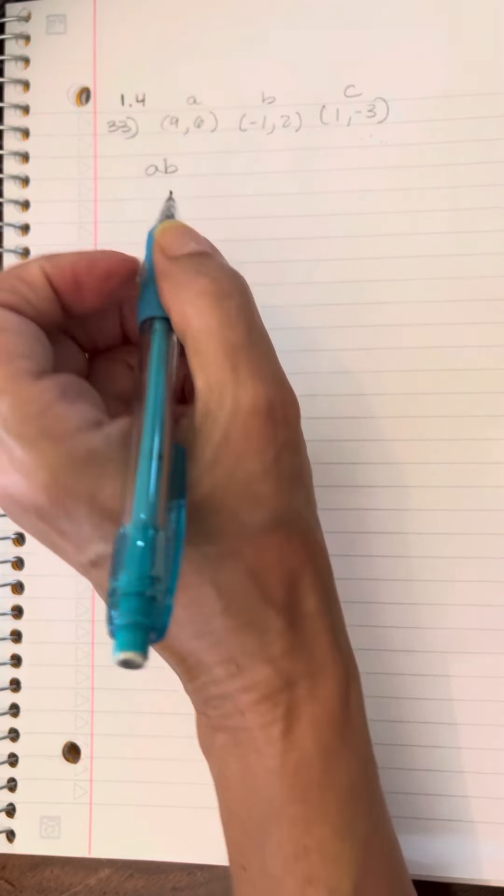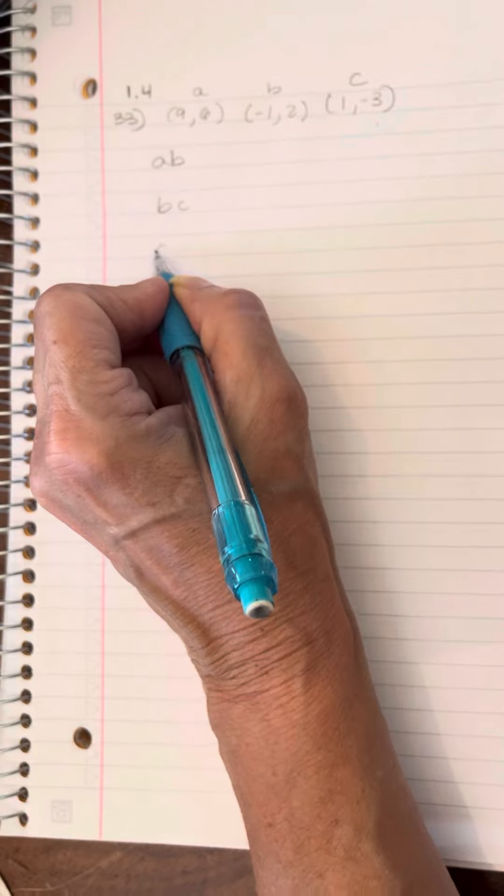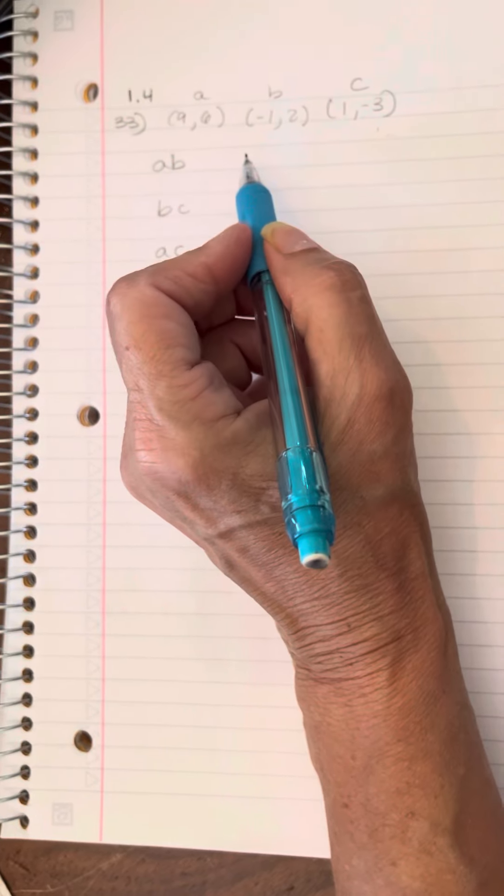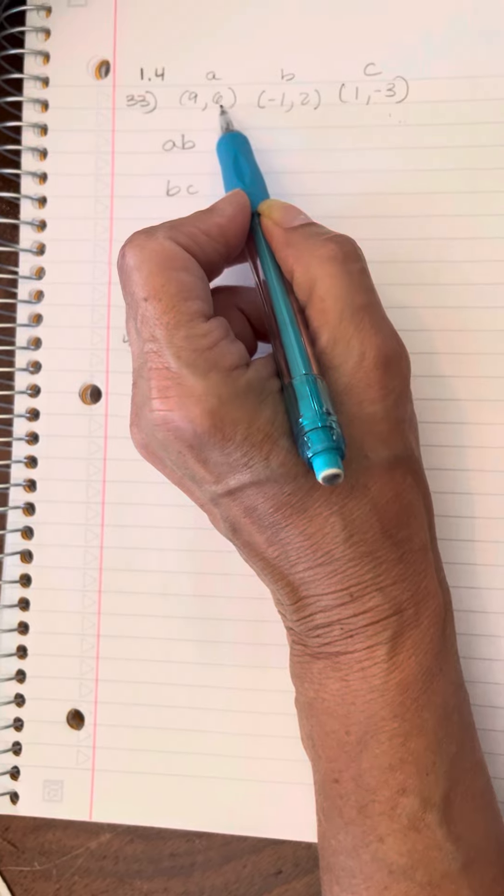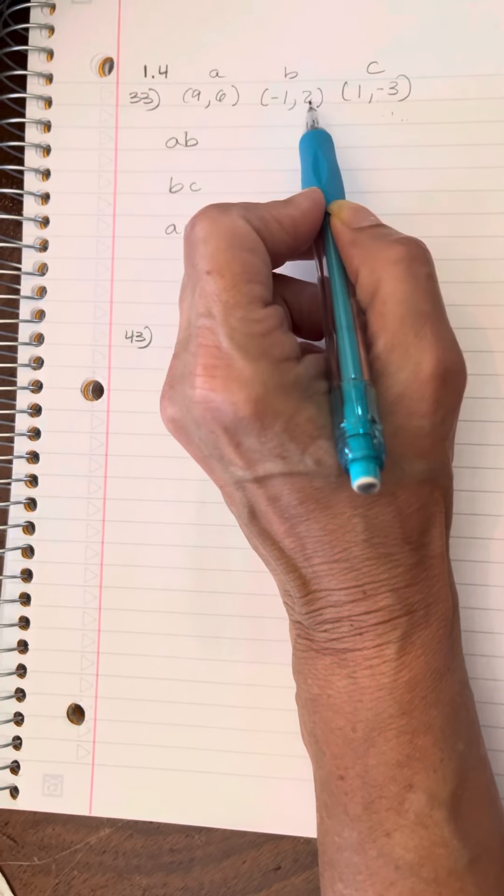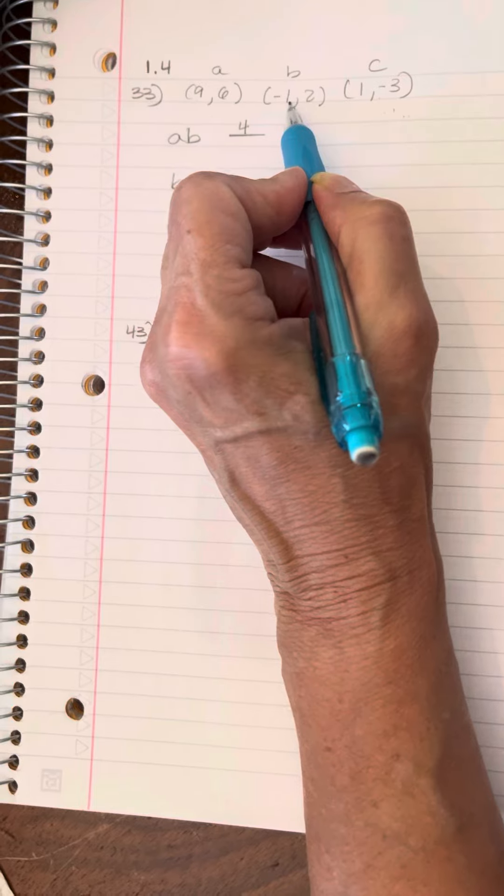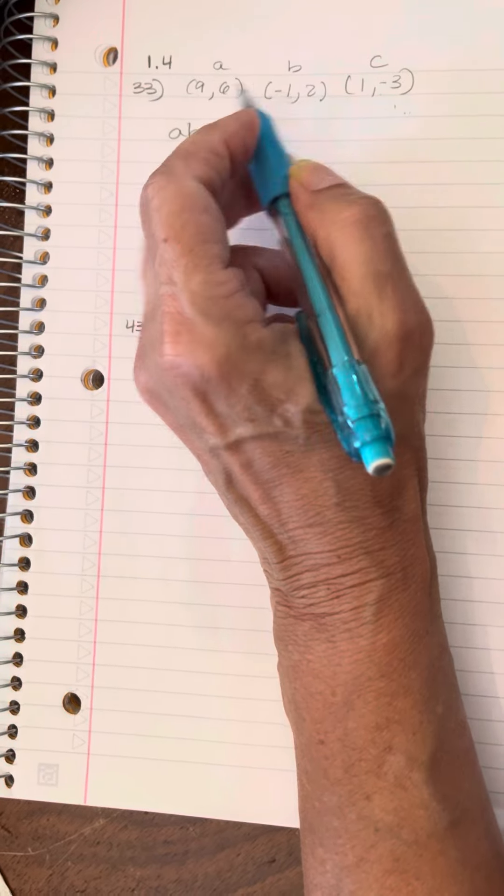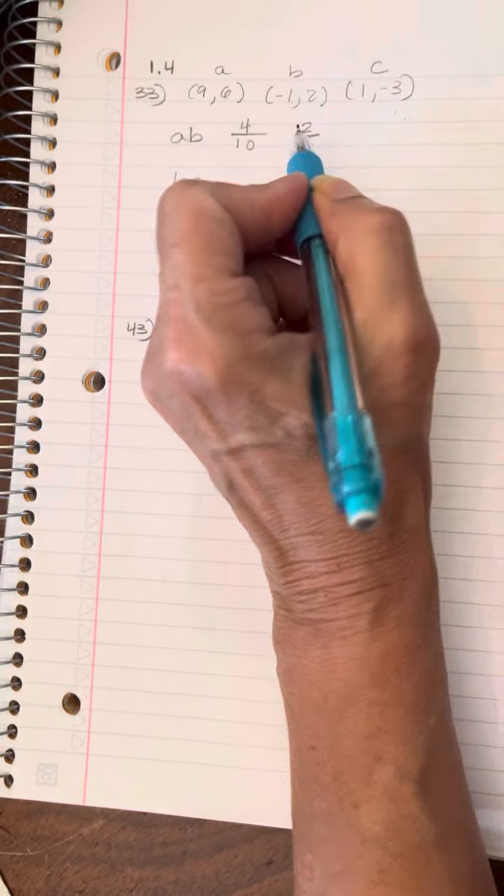So we'll do all three slopes, A, B, B, C, and A, C. All right, so change in Y over the change in X. So that's, we'll do A minus B. Six minus two is four. Nine minus negative one is ten. We'll simplify that to two-fifths. That's the slope.